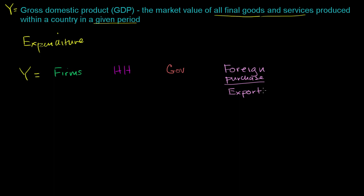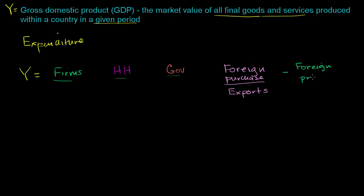Our country is exporting goods and services to people outside of the country and they are purchasing it. Now, this is almost complete. But if we looked at all of the money that firms, households, and governments are spending, some of what they're spending might not be on goods and services produced in this country — they might be spending on things produced outside. So we would have to subtract those out. We need to subtract out foreign products, or in the more typical way of thinking about it, we subtract out imports.